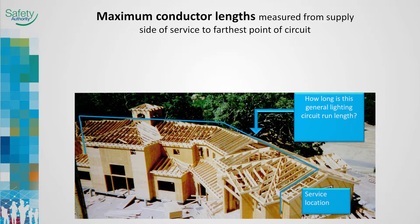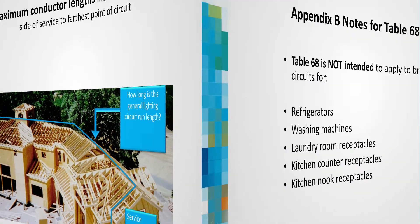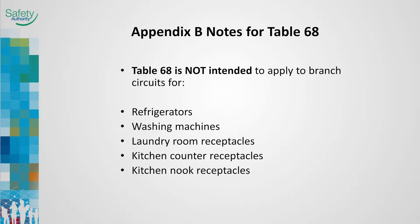Keep in mind that measurement begins at the point of attachment. Table 68 may not be of use if there is a dip service. Table 68 is not intended to apply to branch circuits for refrigerators, washing machines, laundry room receptacles, kitchen counter receptacles, kitchen nook receptacles or other specific receptacles installed in dwellings on dedicated branch circuits, cooking appliance circuits and electrical heating circuits. However, the general voltage drop rules in Sub Rule 1 do apply to these dedicated circuits.